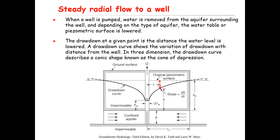A drawdown curve shows the variation of the drawdown with distance from the well. Here this solid black line is the drawdown curve. And then in three dimensions, as you can imagine, the drawdown curve describes a conic shape known as the cone of depression.